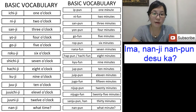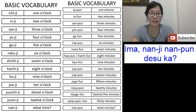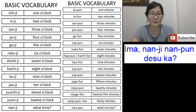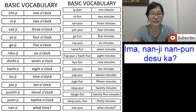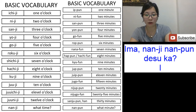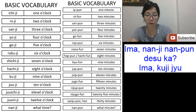'Ima' means 'now', 'nanji' is 'what time' asking about o'clock, and 'nan-pun' is 'what minute', 'desu ka' is a question. So 'ima nanji nan-pun desu ka' means 'what time and what minute is it now?' I can say, for example, 'ima ku-ji juu-yon-pun desu' — now it is 9:14.